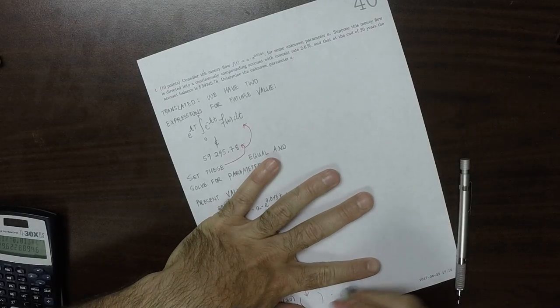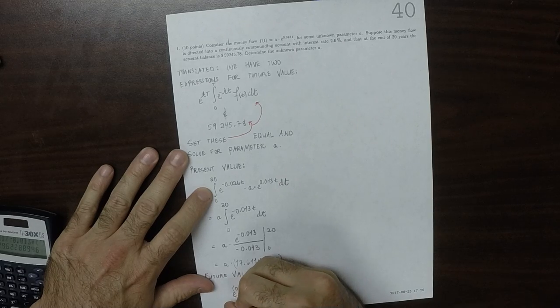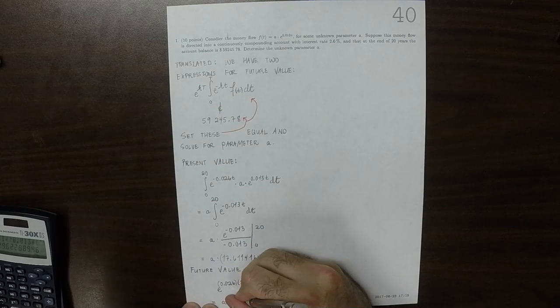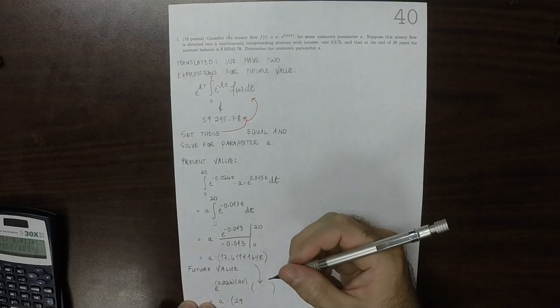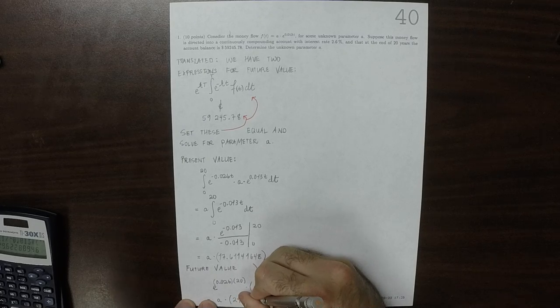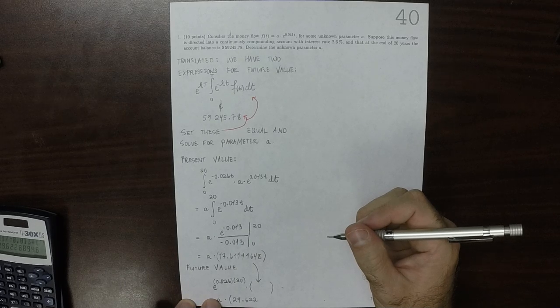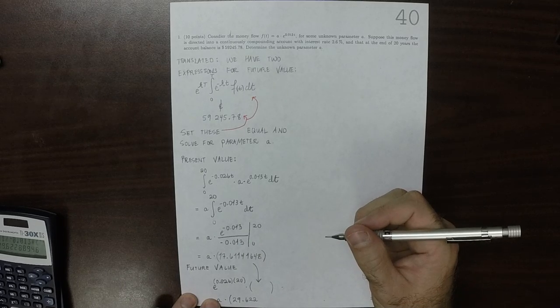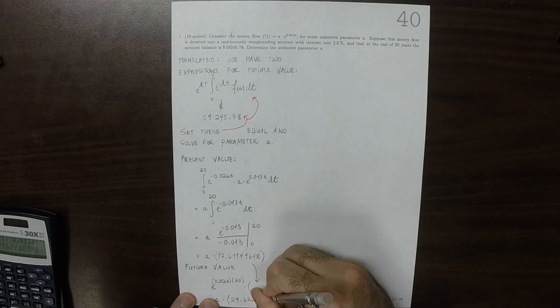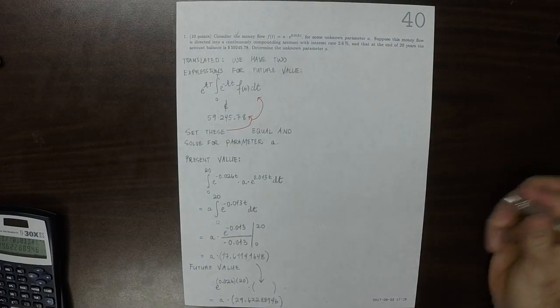Okay, so the future value will be A multiplied by, let's write it below, A multiplied by 29.62288946.